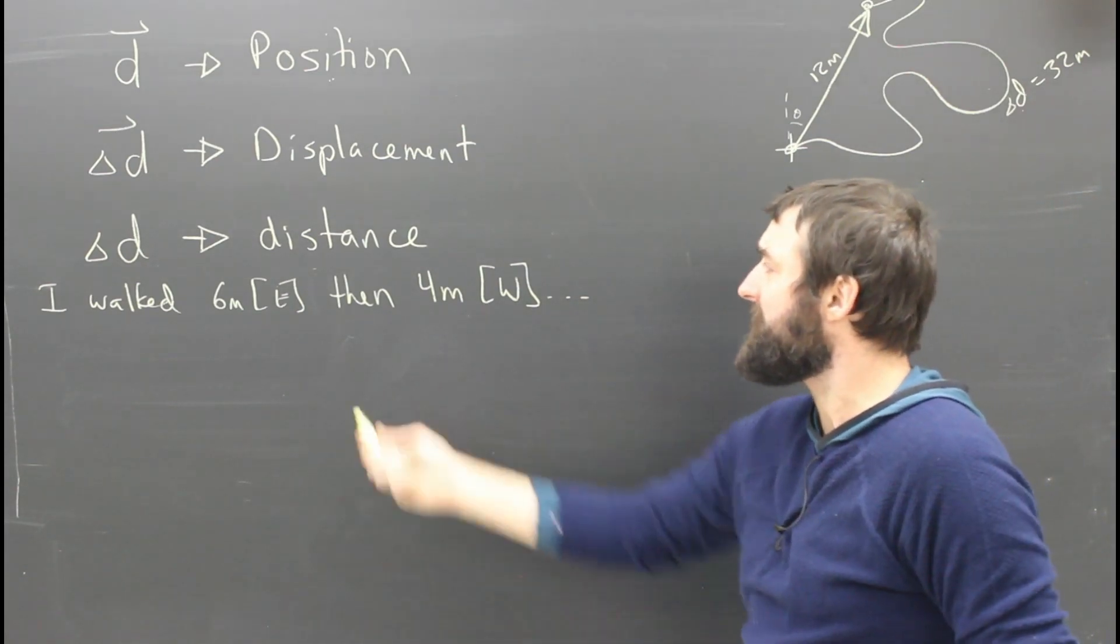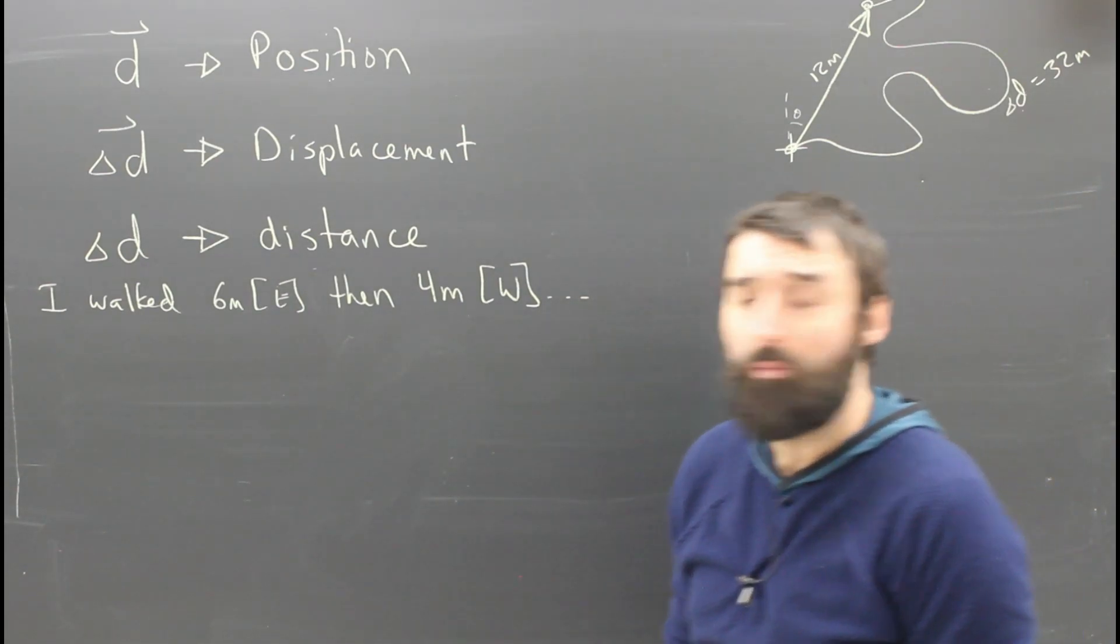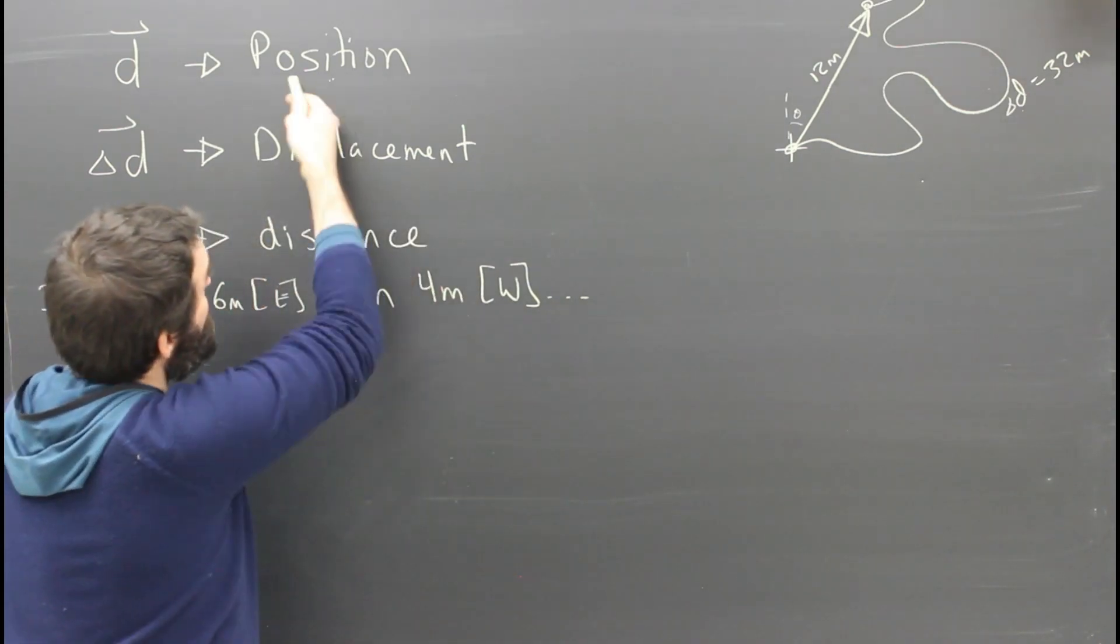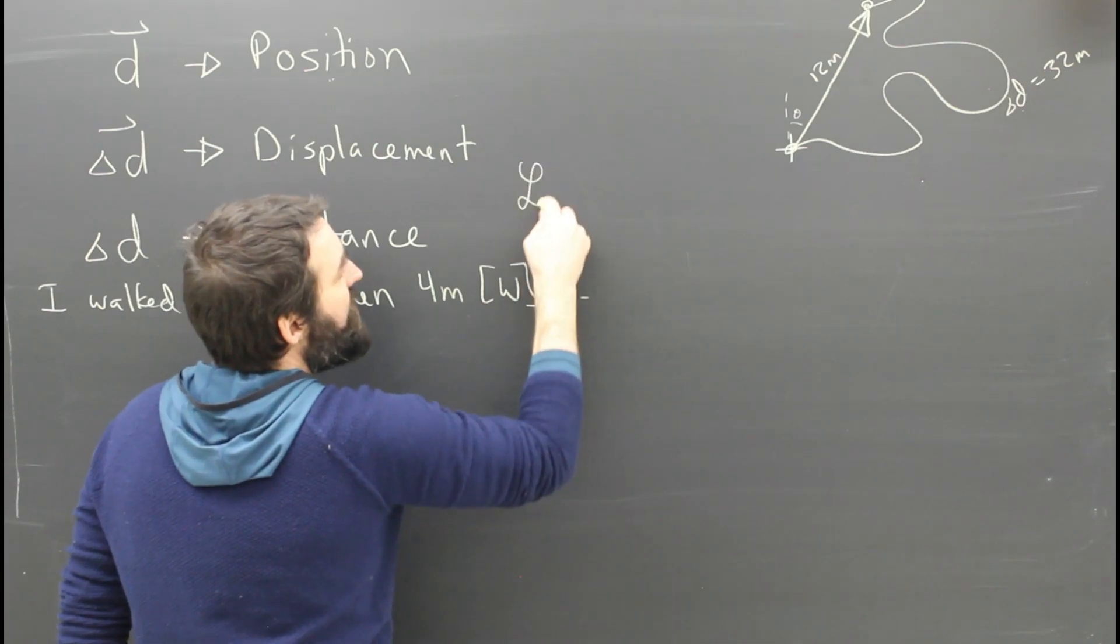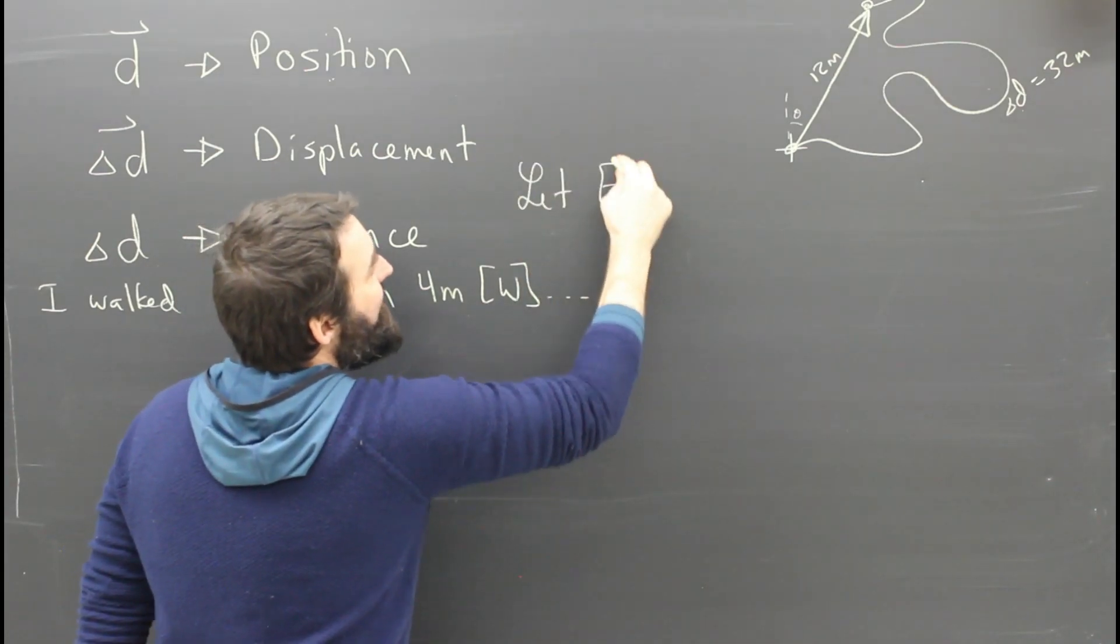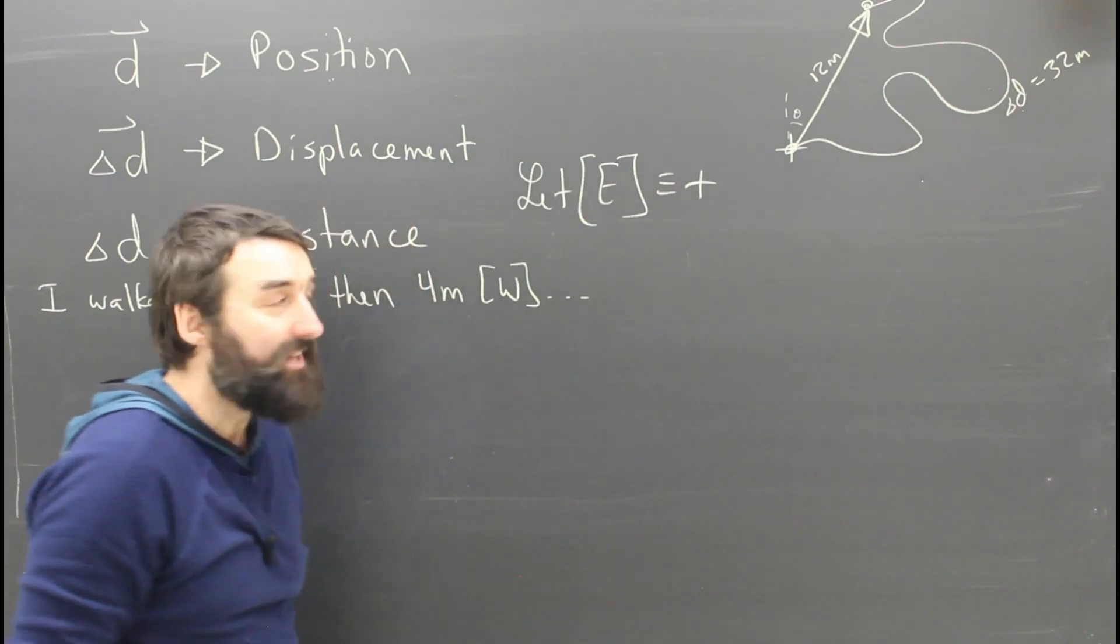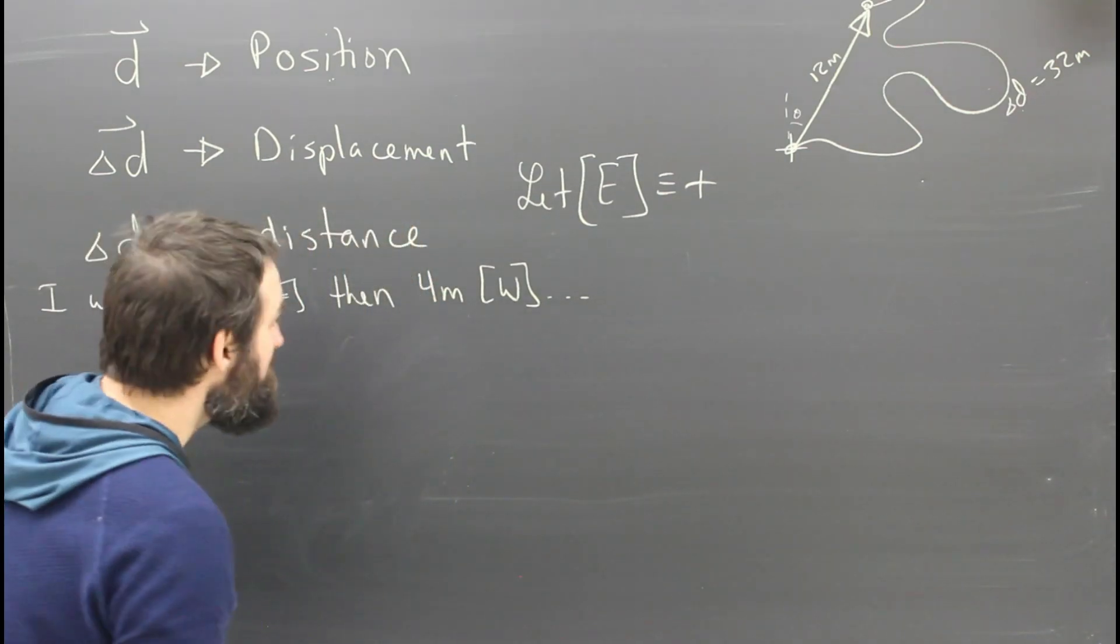Let's try some examples here. I walked six meters east, then I walked four meters west. First thing I should do in any physics problem, especially once I've learned about vectors, is I should define my coordinate system. So I'm going to say, let east be the same thing as positive. Let east be positive.